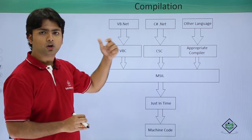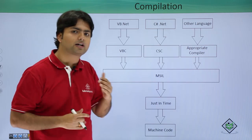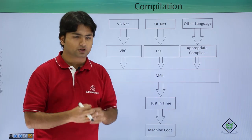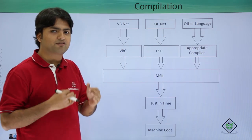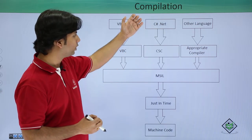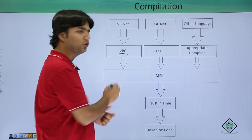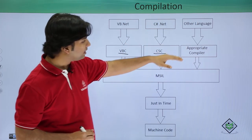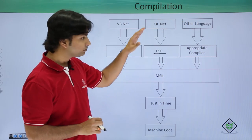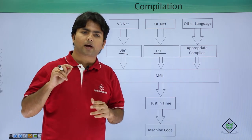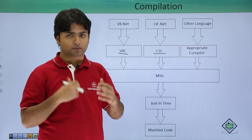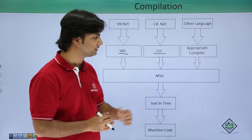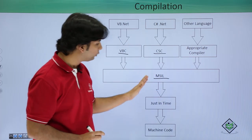Let's imagine we want to create an application requiring many programs written in various programming languages — suppose 40 forms written in different languages. As a developer, we compile the different language code with different compilers such as VBC for VB.NET, CSC for C-Sharp, or the appropriate compiler for any other language. All the programs get compiled and the complete code is put into MSIL, that is the Microsoft Intermediate Language.